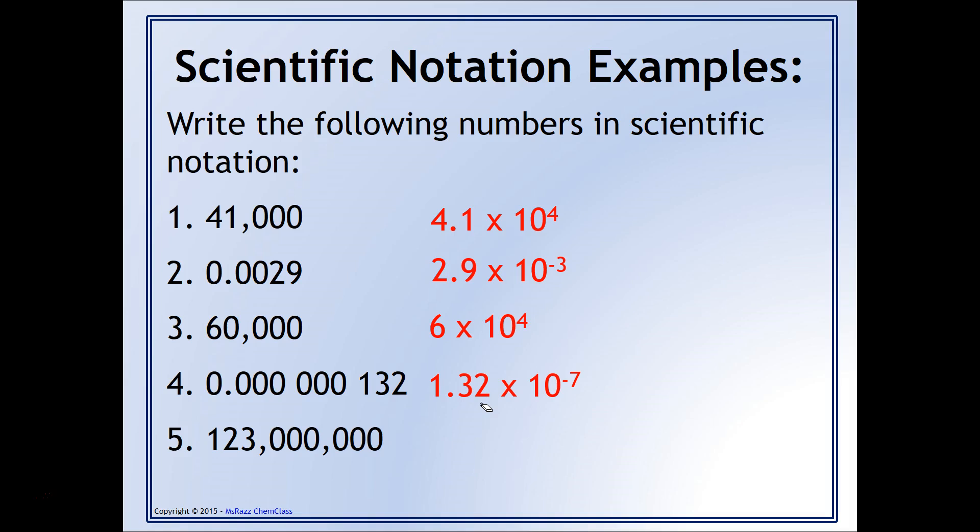And then finally, in number 5, this is a fairly large number, so that means that your exponent is going to be positive, and you're going to have to move that decimal point a total of 8 decimal places to the left in order to put the decimal point in between the 1 and the 2.